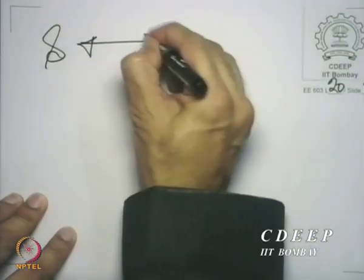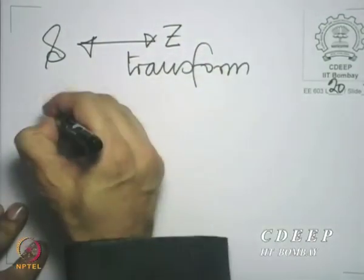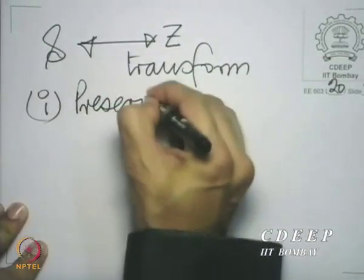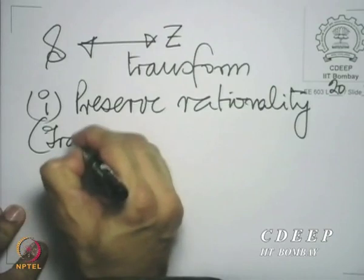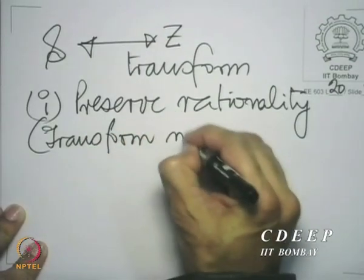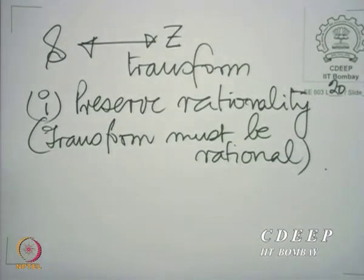The S-to-Z transform should preserve rationality. The transform should be rational on its own, because an analog filter system function is expected to be rational. Rationality corresponds to realizability even in the analog domain. So the analog system function itself is expected to be rational. You want to retain that rationality when you go into the discrete domain by making an S-to-Z transformation. The only way you can do it is if you replace S by a rational function of Z.